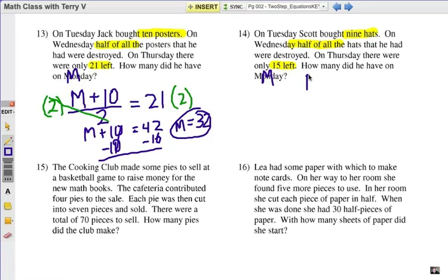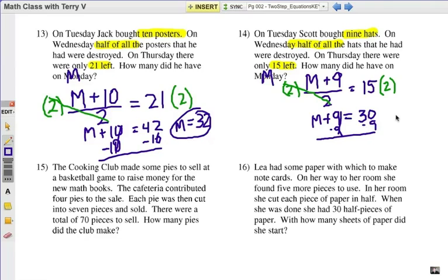Monday's hats added to nine, because he bought nine additional, and then half of all of that. That represents the 15 he has left. Multiply both sides by the free number of two. M plus nine equals 30. And then we subtract nine from each side to get our answer of 21. So Scott started with 21 hats on Monday.